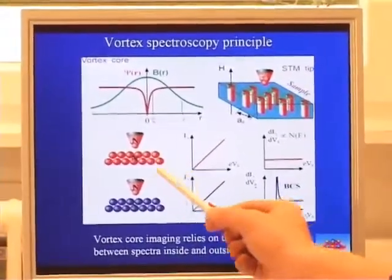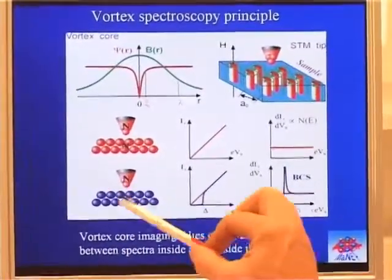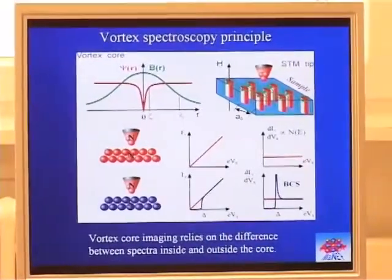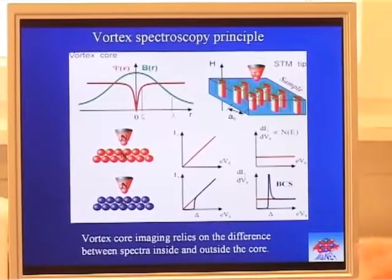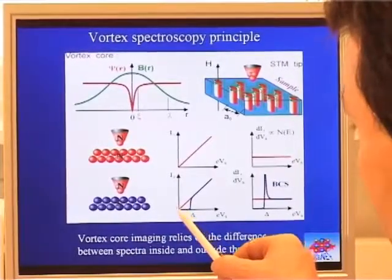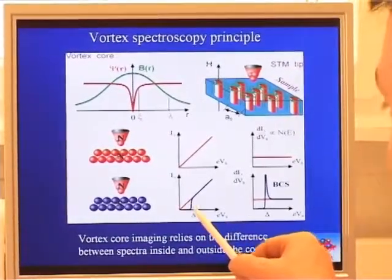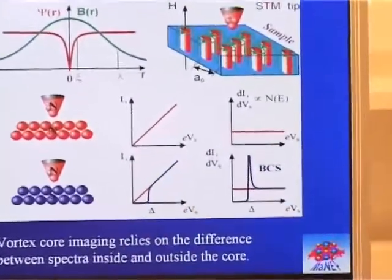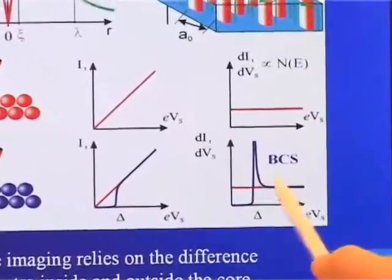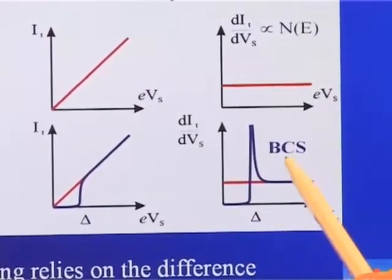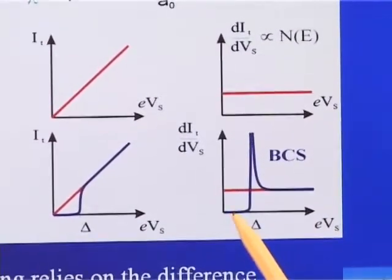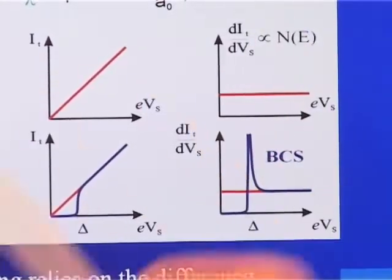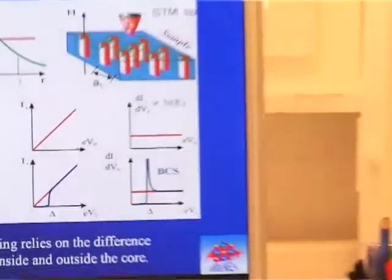In the case of a metallic tip, normal metal tip and a superconductor, you expect a completely different behavior. Because of the pairing of the electrons, you will have no current flowing until the voltage between the tip and the sample reaches the gap delta value. So the conductance characteristics is completely different. In that case, you'll have a zero conductance up to the delta and a big peak according to the BCS theory.